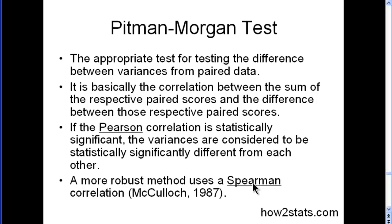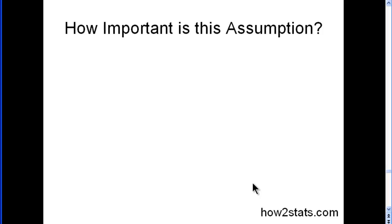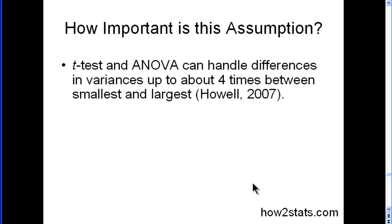The Spearman version is more robust when your distributions are skewed or not normally distributed. How important is this assumption? A T-Test and ANOVA can handle differences in variances up to four times between the smallest and largest. Howell's Statistical Methods for Psychology textbook provides a brief summary of publications on the homogeneity assumption, concluding that when you violate it and run T-Tests or ANOVAs, you can handle up to four times greater variance.